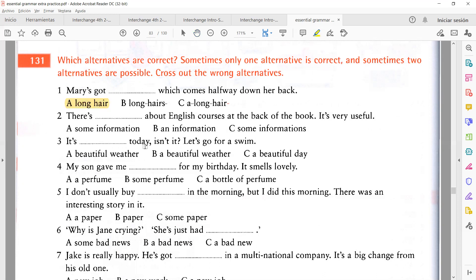Tú qué dices, el cabello será contable o incontable? Incontable, incontable. Entonces cuál pondrías? Long hair, la A. Esa es la correcta, long hair. Aunque también podría ser a long hair, no verdad? Porque estarías ya contando, sería un cabello largo y los demás cortos. Entonces sería long hair, es esta. Number two, there's blank about English courses at the back of the book, it's very useful. Some information, cuál? No puede ser an information?